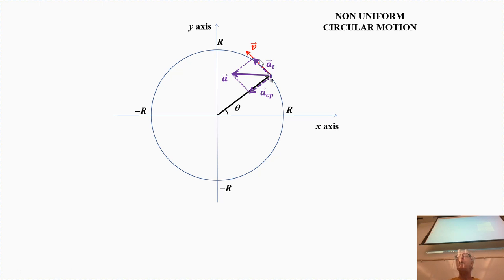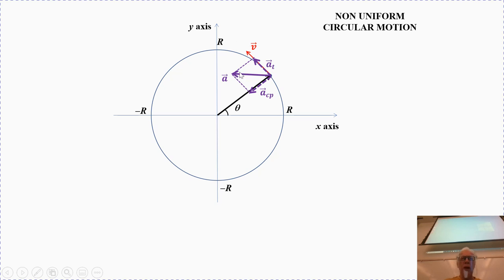That's how we display this acceleration vector, in terms of a radial component and a tangential component, which is related to the polar coordinate system. When you sum those two components, you get the net acceleration. The centripetal component is still towards the center of curvature, but because we have a tangential component, it is twisted a little bit to the other side.